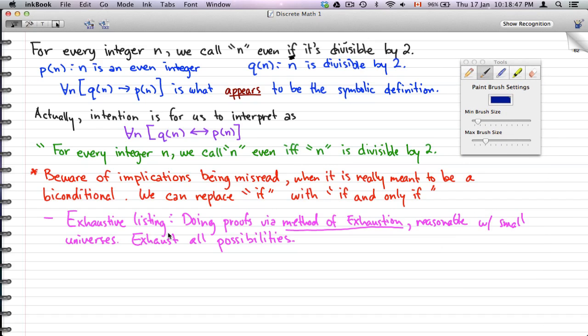Exhaustive listing, the definition of that is just doing proofs via the method of exhaustion. It's reasonable with small universes, and what you're trying to do is exhaust all possibilities. So for example, if I gave you a universe of just a die, a world of a die, which gave us 6 events, then you could use a method of exhaustion if I gave you a random statement for that universe. And you could use that universe of 6, or you could exhaust every possibility, which is only 6 because the die has 6 sides.